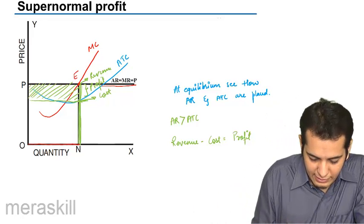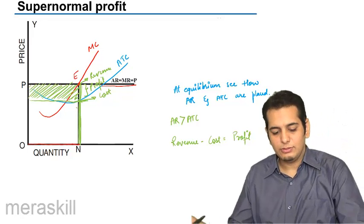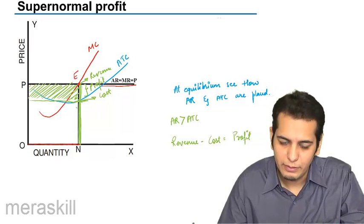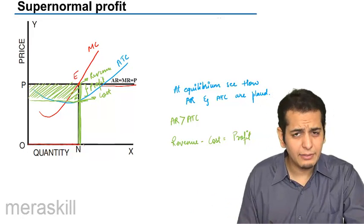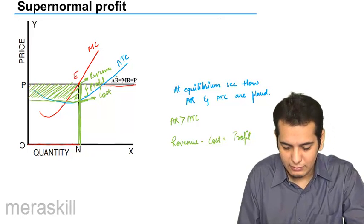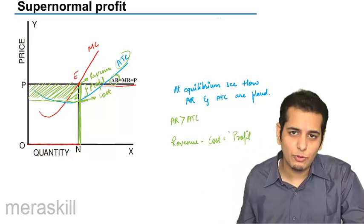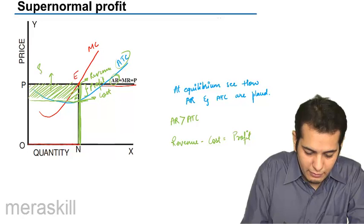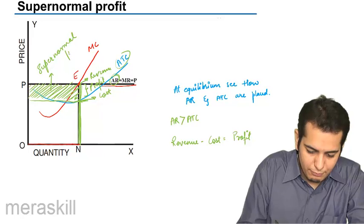So by selling ON number of units, this shaded region would be the amount of profit that the firm would be incurring. Please note that at equilibrium, when ATC is less than AR, you will have a situation of supernormal profits. This is my supernormal profits.